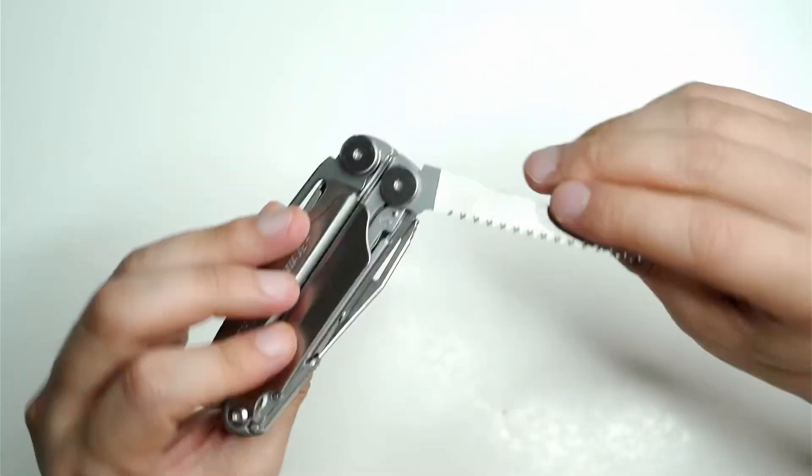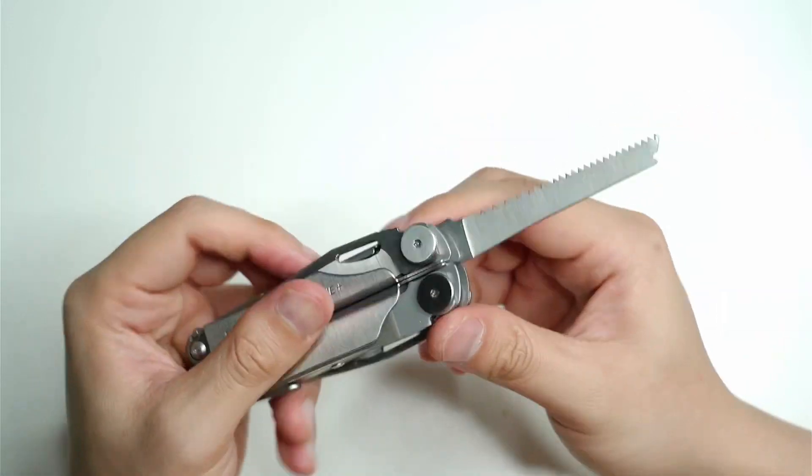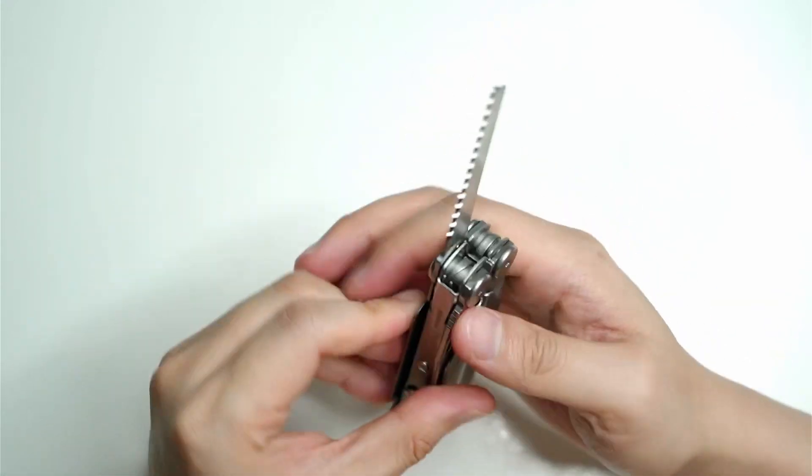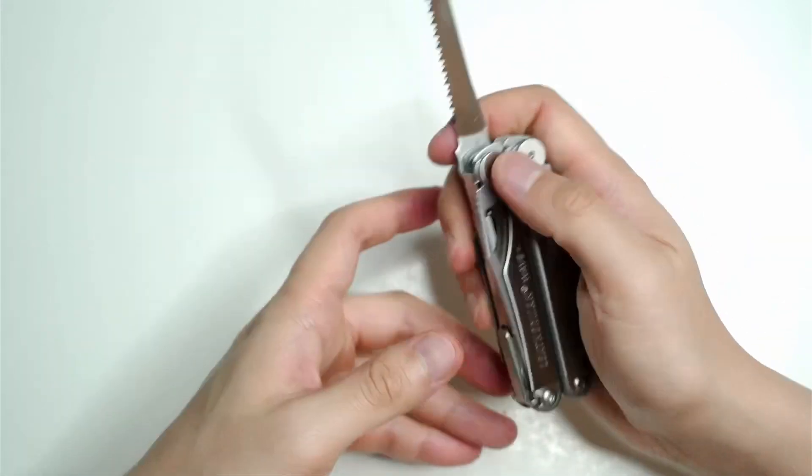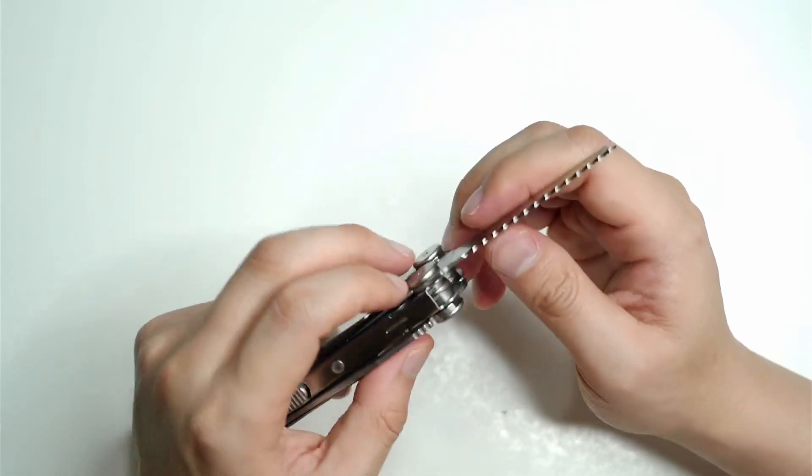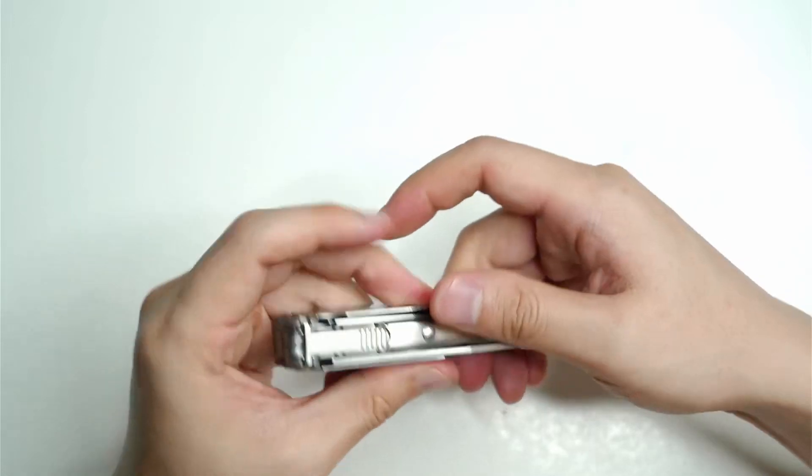And let's have a look what else you got on the other side. You've got a wood saw, decent length as well. I'm not going to cut any tree trunks with that, but definitely any smaller limbs and things like that. No issues at all.